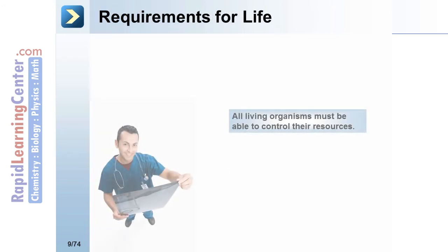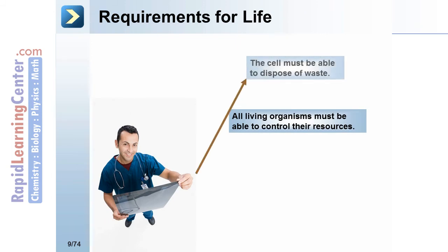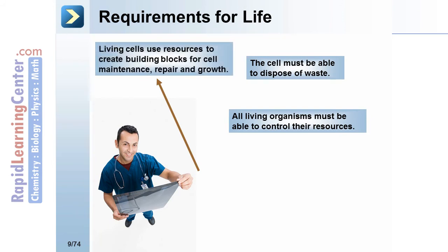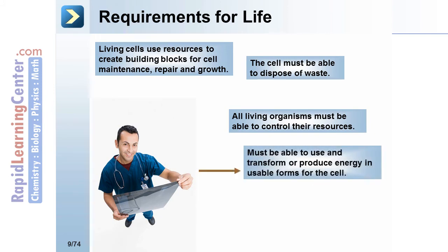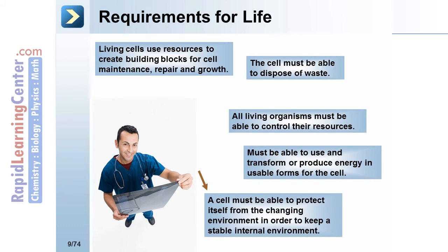Requirements for life: All living organisms must be able to control their resources. The cell must be able to dispose of waste. Living cells use resources to create building blocks for cell maintenance, repair, and growth. Cells must be able to use, transform, or produce energy in usable forms. A cell must also be able to protect itself from the changing environment in order to keep a stable internal environment — this is called homeostasis.